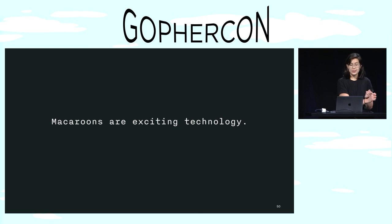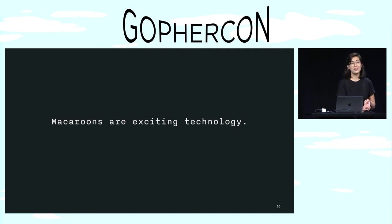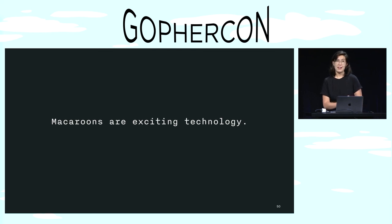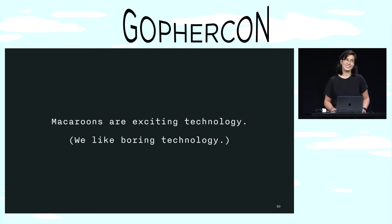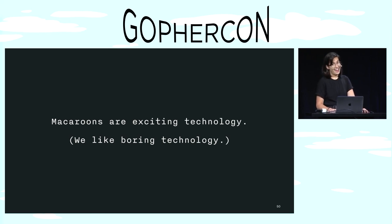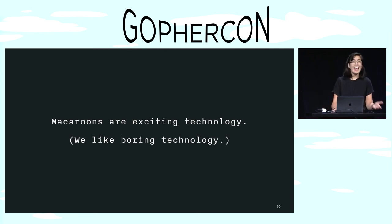Macaroons are an elegant technology, but they're also a novel technology — they're not commonly used. Things like the caveat format are still unspecified. There aren't many providers for third-party caveats, let alone robust providers. There is a decent amount of literature describing them, but not that much from folks who've used them in production. My team likes boring technology, which is partly why we do so much with Go. And in the end, we found that macaroons were just too exciting.